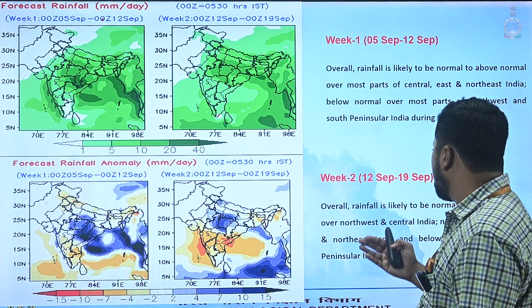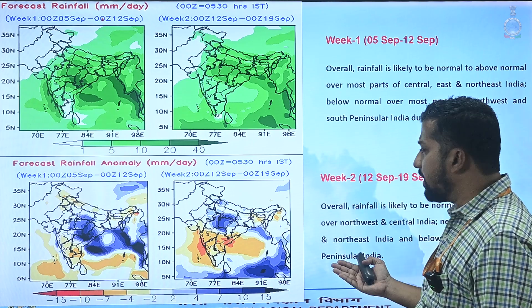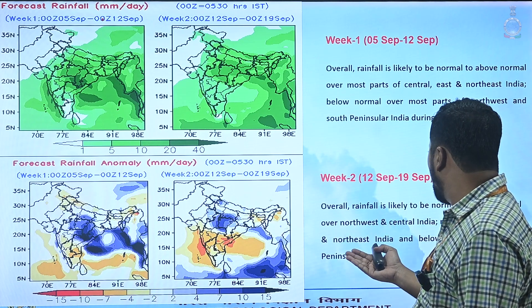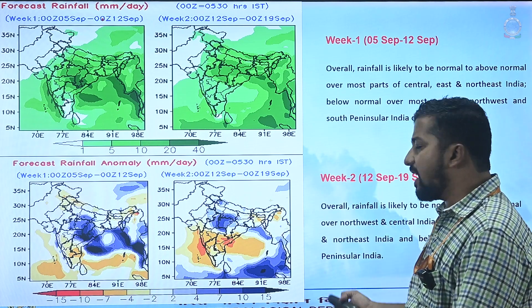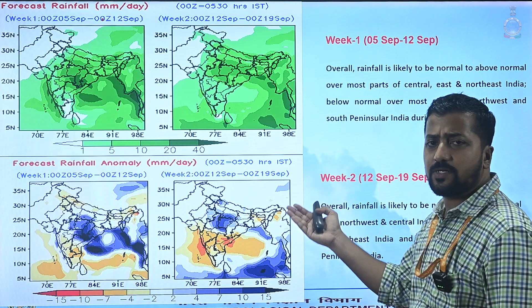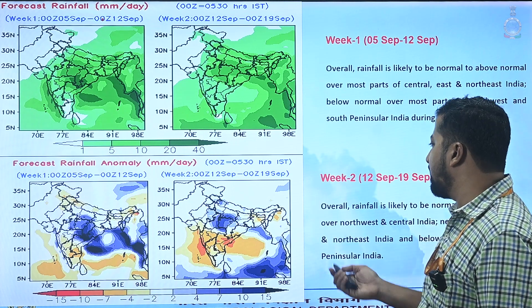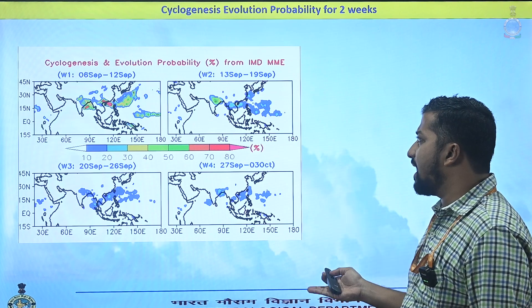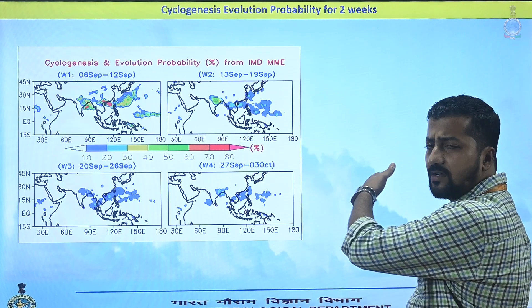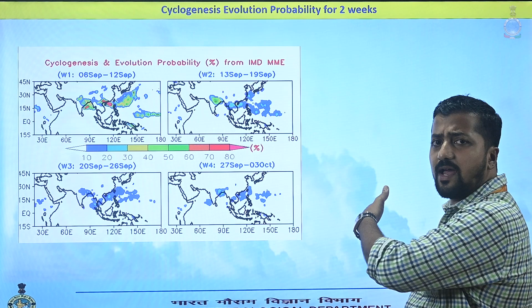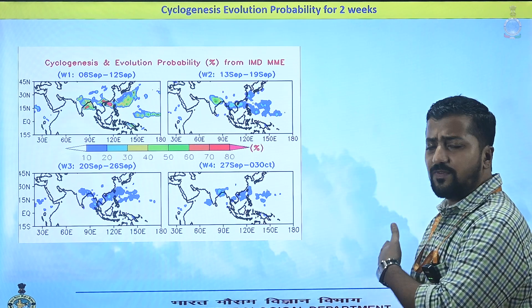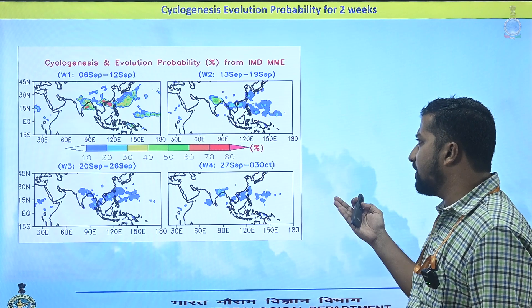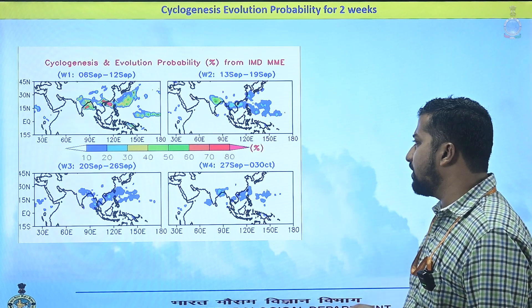For week two, rainfall is forecast to be normal to above normal over northwest and central India, near normal over east and northeast India, while southwest peninsula and northwest India are expected to receive below normal rainfall. The cyclogenesis evolution from the IMD MME model shows the current low pressure system in week one, with expected intensification into a depression in the next two to three days, and the same system traveling inland during the second week.